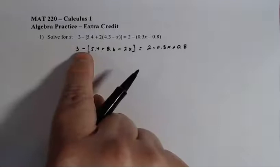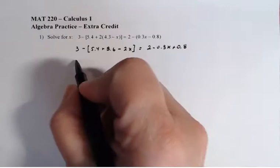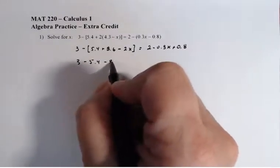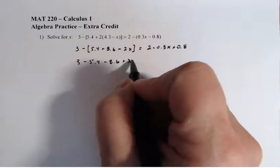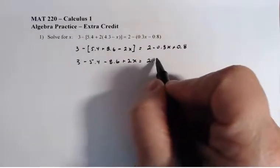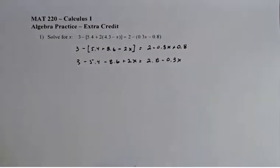The next thing I'm going to do is distribute this negative here and combine these like terms over here. So 3 - 5.4 - 8.6 + 2x is equal to 2.8 - 0.3x. So far so good.